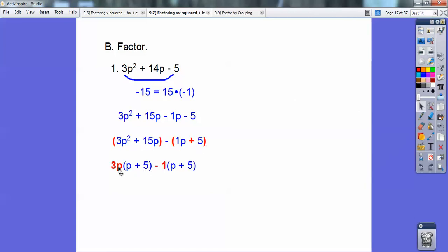Remember, if you're wondering what happened, just multiply 3p through. 3p times that gets me that. Negative 1 times that gets me that. Now notice they both have a p + 5. I'm going to pull that out. There it is. And I left the red stuff. Try it with this one.